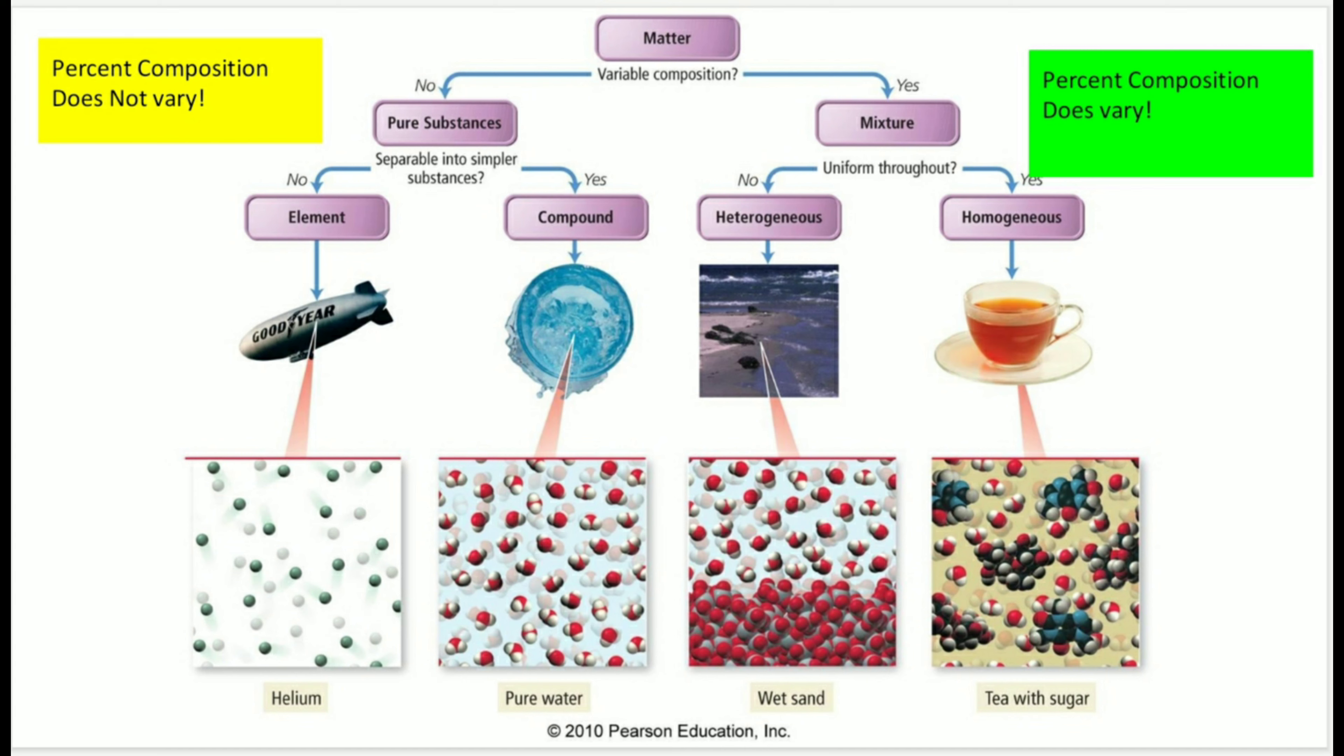This is not true for mixtures. In mixtures, the particles are not chemically combined, so each component can vary. That is why a mixture of ocean water in the Dead Sea, although it has more salt per water, is still called salt water, just like a mixture of salt and water in the Atlantic Ocean. Again, in mixtures, the percent composition can vary.